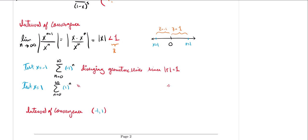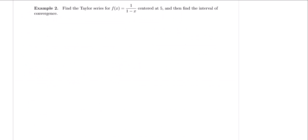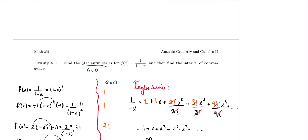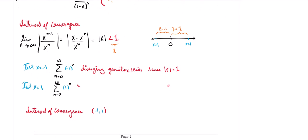Now let's take a look at another example which is very similar but with a very important difference. We want to find the Taylor series for f(x) = 1/(1-x), but this time we are centering it at 5. When we did the Maclaurin series centered at 0, our interval of convergence was only from -1 to 1 — meaning our power series is only applicable, or only matches the function, within that interval.